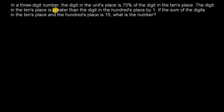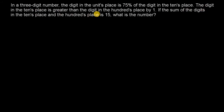Let us find the number. Here a number is described — the number is a 3-digit number. The condition is that the digit in the units place is 75% of the digit in the tens place. And the next condition is that the digit in the tens place is greater than the digit in the hundreds place by 1. Correct?